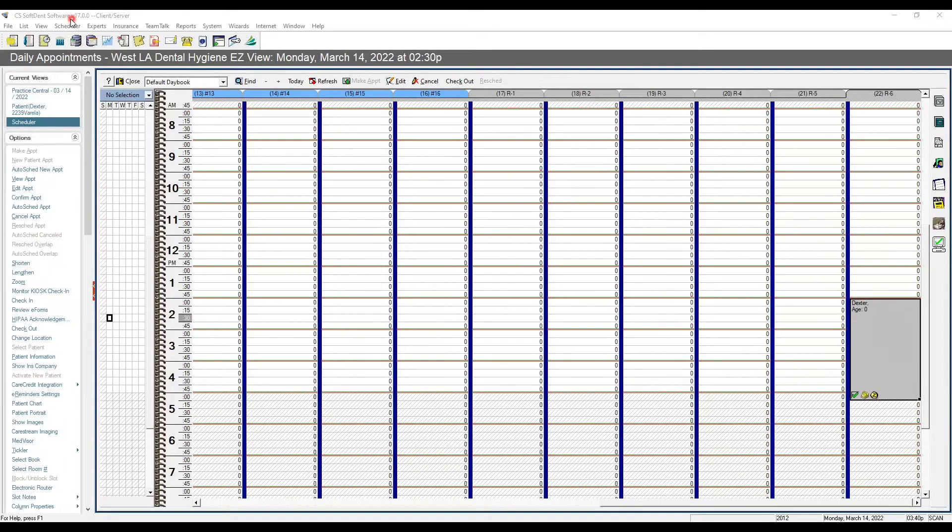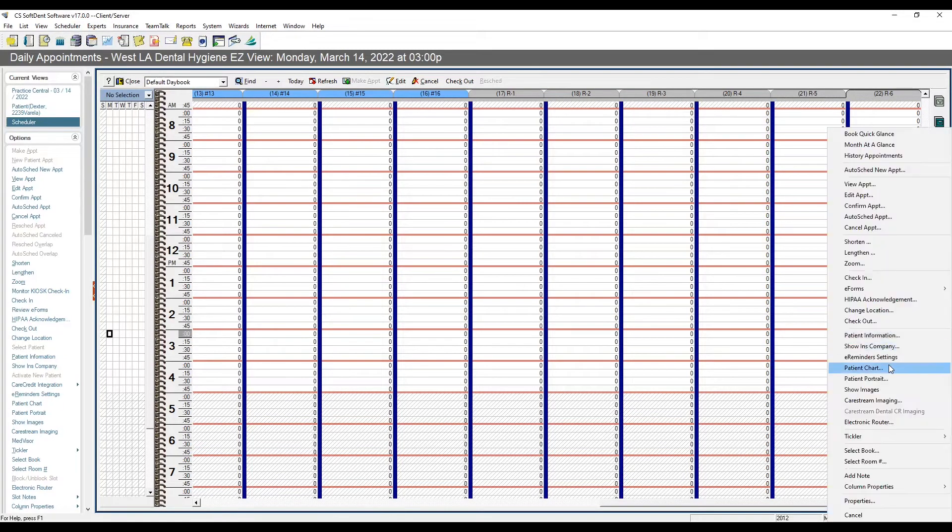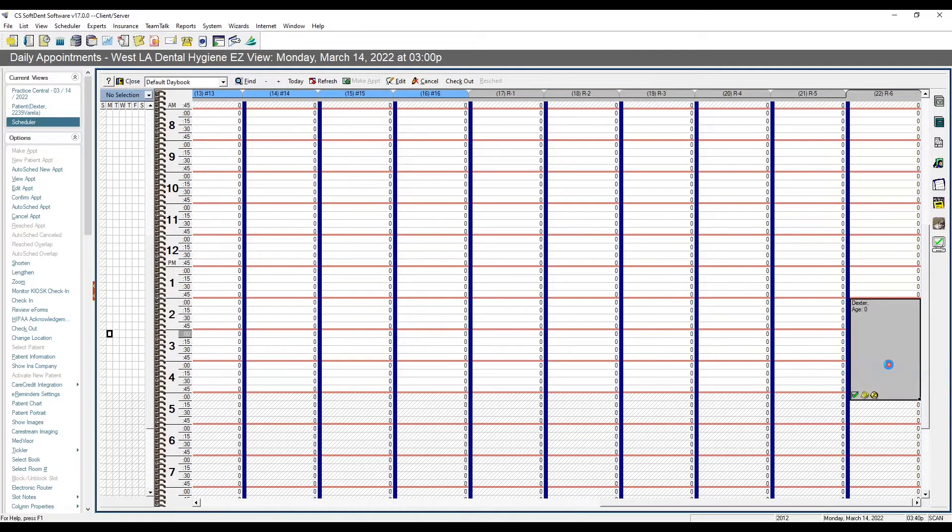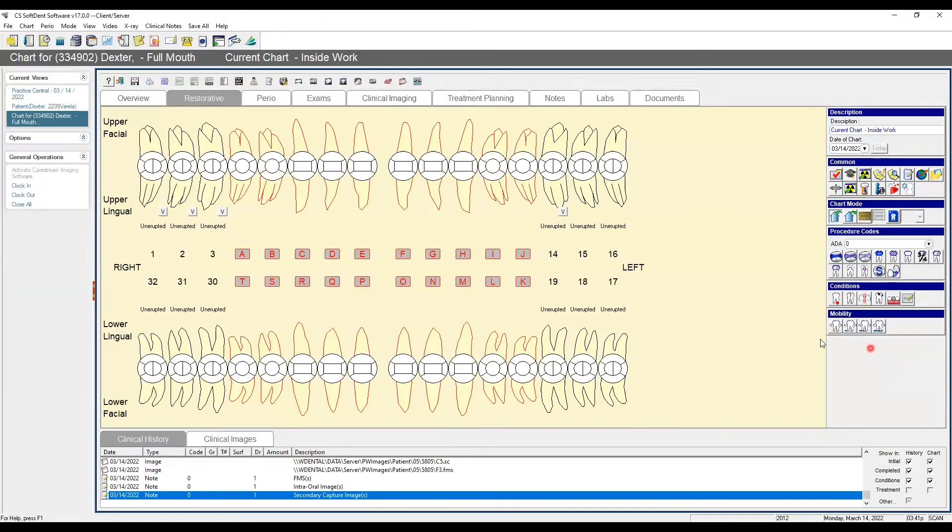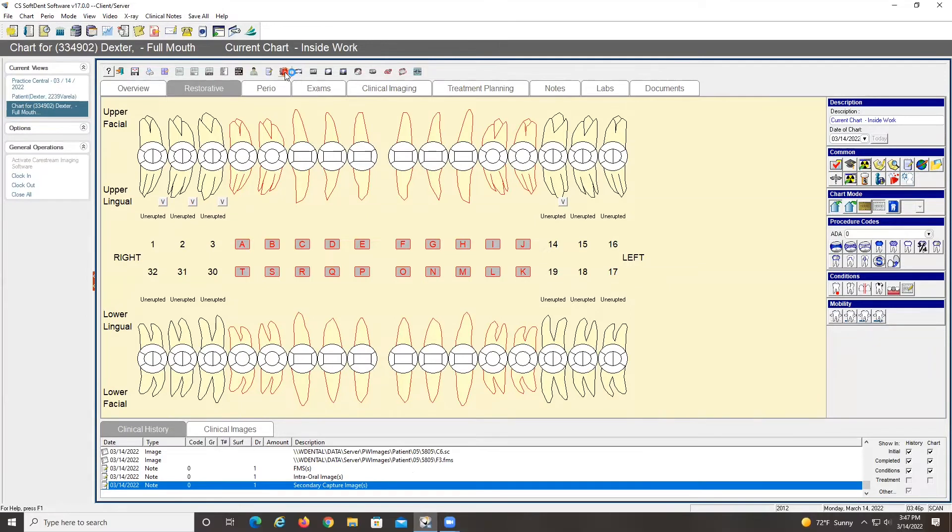So upon turning on the phosphor plates scanner, we're going to go ahead and access scheduler, daily appointments, head to our patient's chart. And from here, we're going to go ahead and head to the x-ray section right here, the little lion.